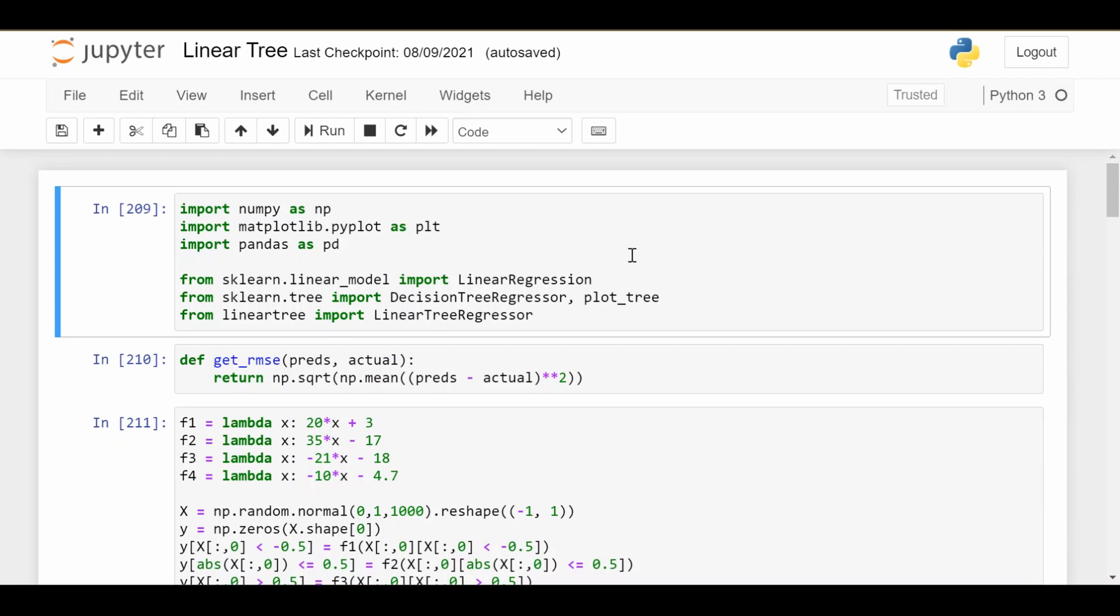Since I had the code already ready, we can run through this pretty fast. The only new library you need is to pip install this linear tree library. Once you've pip installed that, you can import it just like this, and the rest is pretty simple.